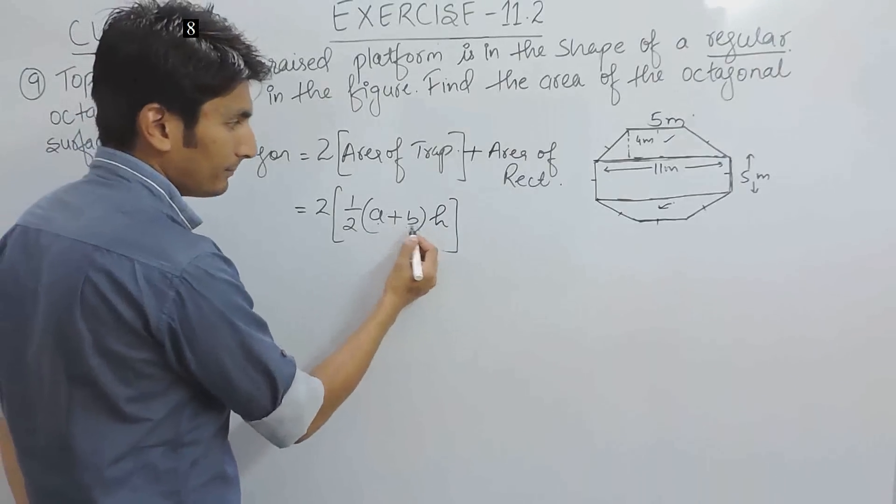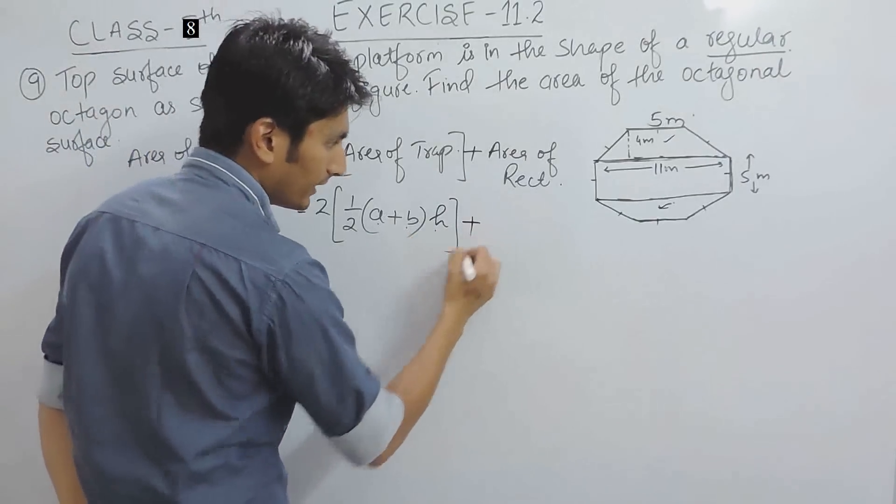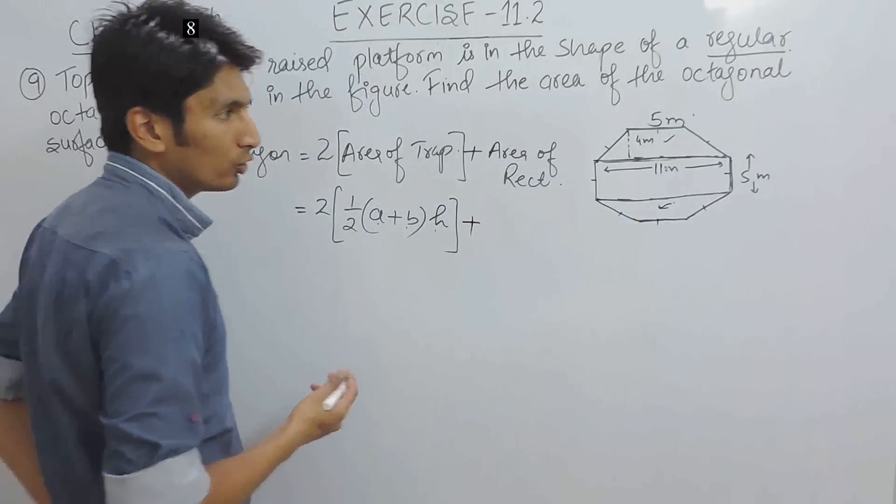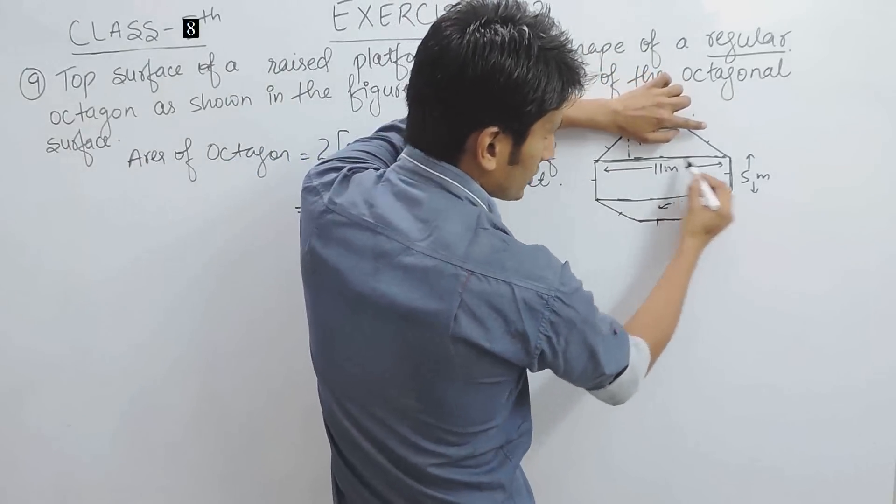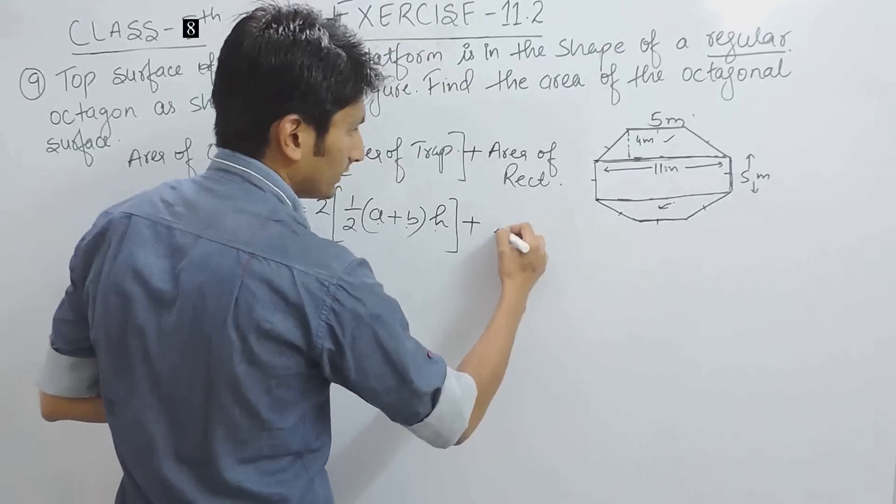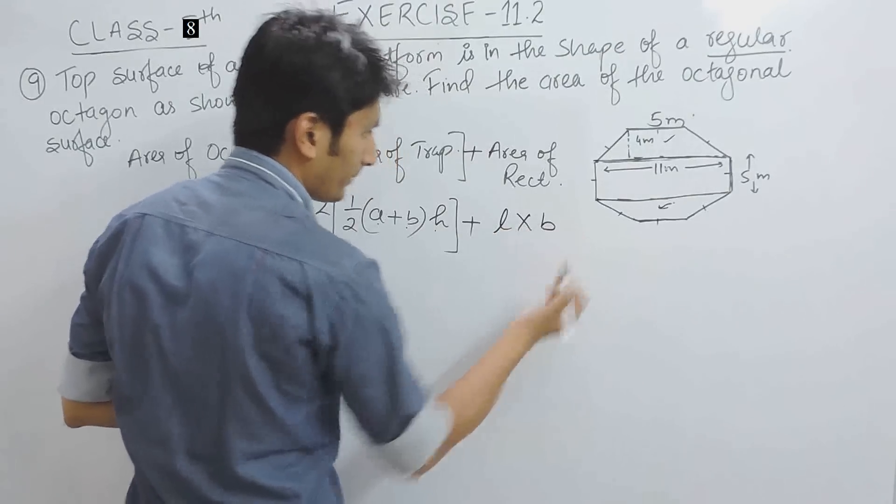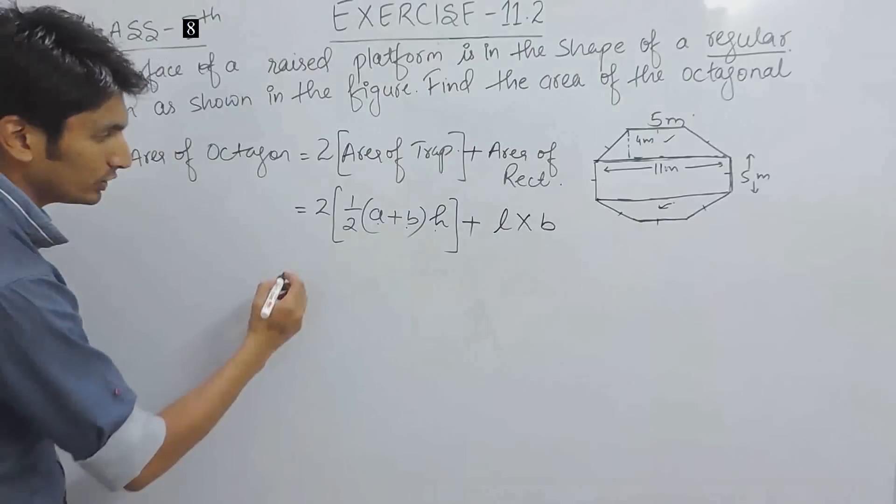Now, we have both the values and plus the area of rectangle, this is the rectangle and the area which is equal to length into breadth. So, the area will be length into breadth. Now, we can substitute the values.